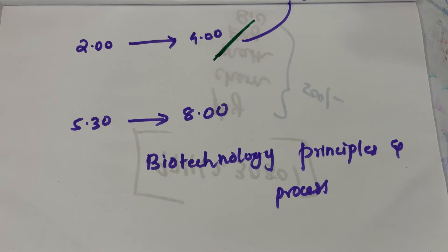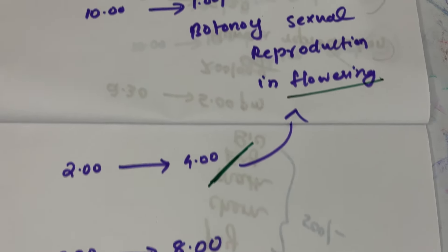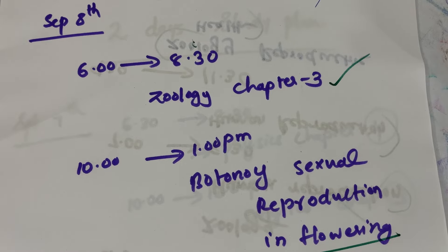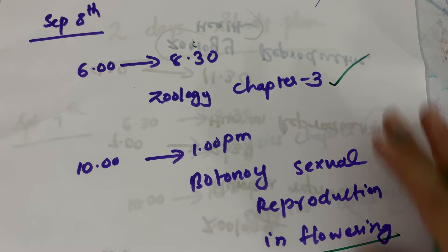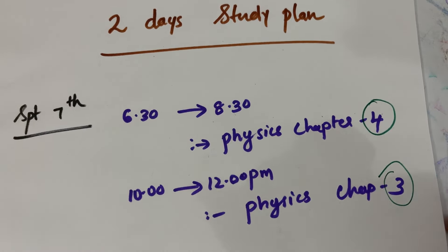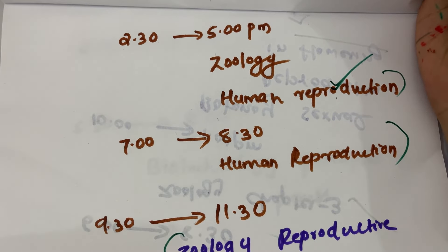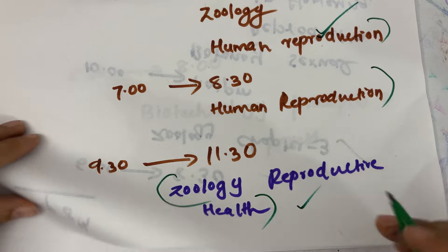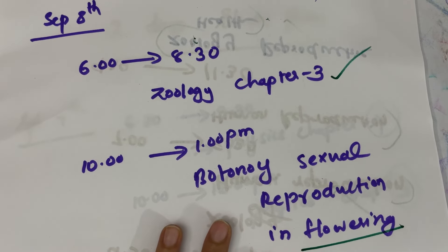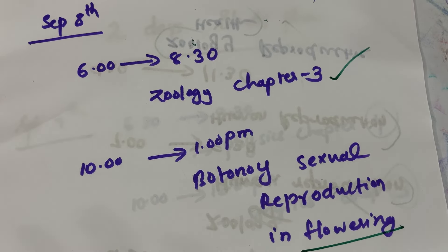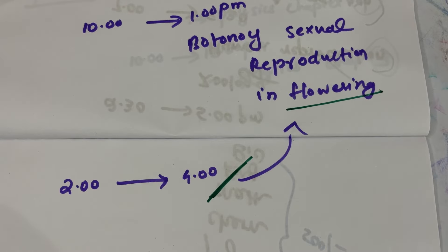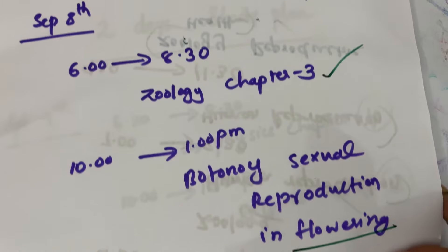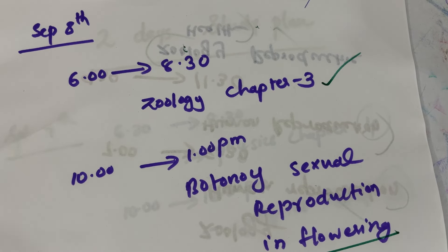Then you will have some questions to study. Let's start with the second class. Then you will learn a lot about zoology and then reproductive health. Then you can complete zoology. 1 botany, 2 botany, 2nd chapter. 2 botany, 3 botany, 2 botany. You can learn how to do this in school.